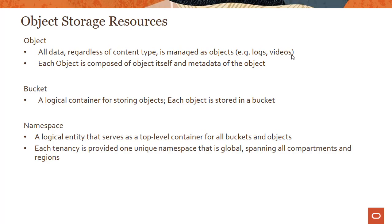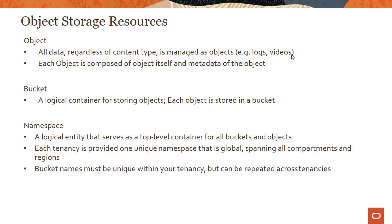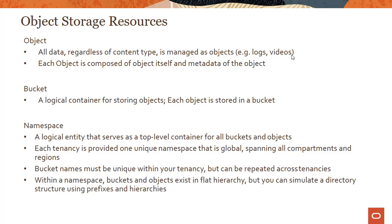Each tenancy, when created, is provided one unique namespace that is global, spanning all compartments and regions. So you have one namespace which is global, but bucket names can be repeated across tenancies — they must be unique within your own tenancy, but not globally. The real unique identifier is the namespace. This is different from Amazon S3, where bucket names must be globally unique. In OCI, bucket names need only be unique within the tenancy because the namespace — which maps to your tenancy — serves as the unique identifier. Within a namespace, buckets and objects exist in a flat hierarchy, but you can simulate a directory structure using prefixes and hierarchies.